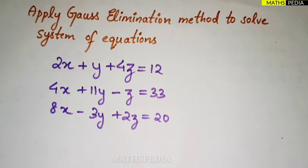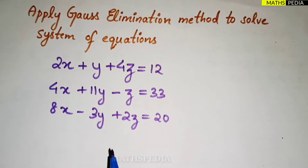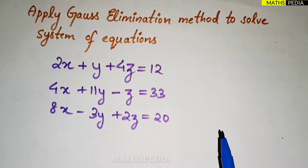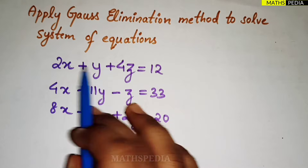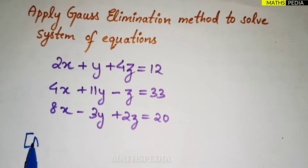Hello guys, in this video we'll solve one problem based on Gauss elimination method. It is basically used to solve the system of equations. You can see here three equations are there in which three variables x, y, and z are involved in each equation. First step is that the right-hand side should have all the constants, and the left-hand side all the x, y, z terms.